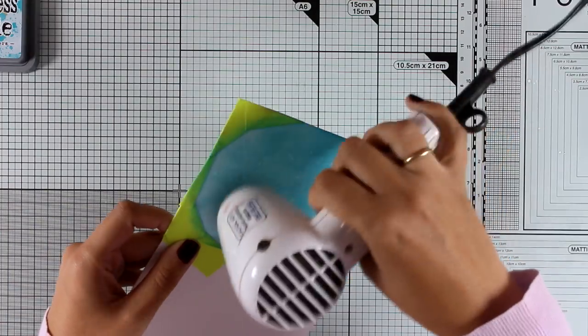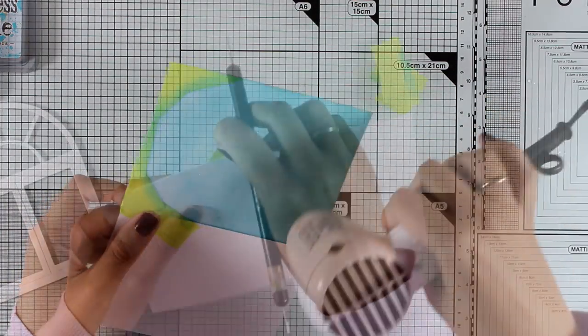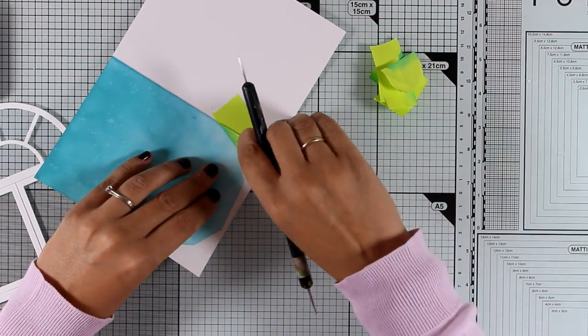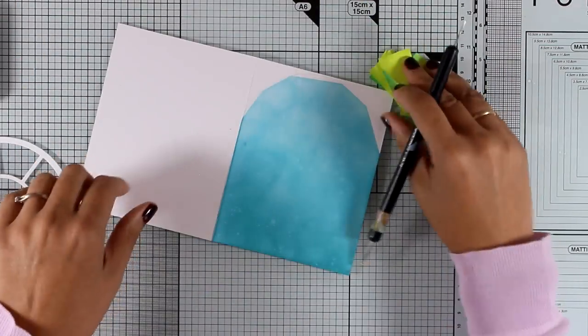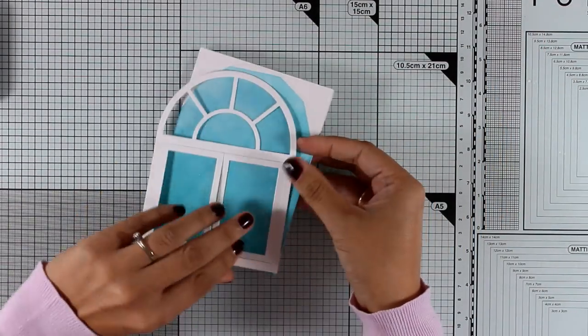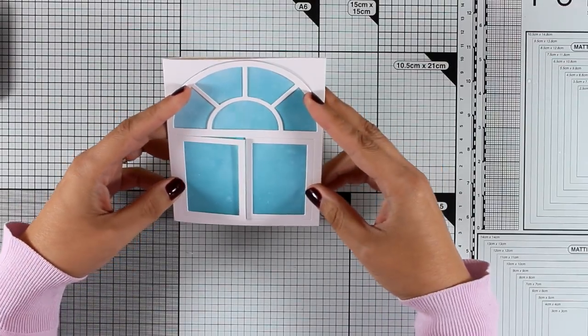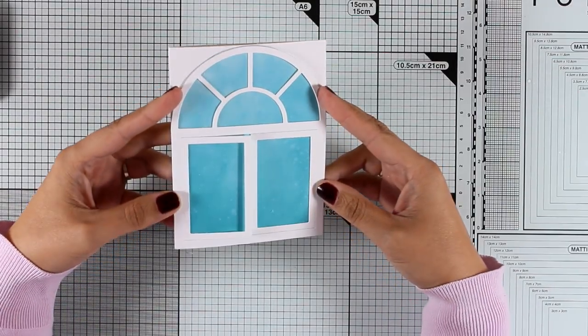I removed the post-it tape and I'm going to check that everything looks fine once I place my window frame on top of my card base. I was really happy with the result, so now I can go ahead and start working on the elements that I'm going to stick at my background.